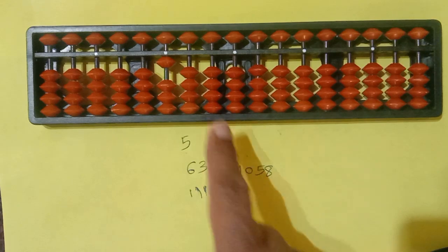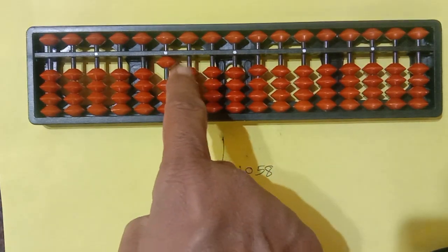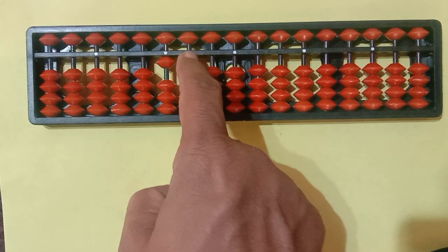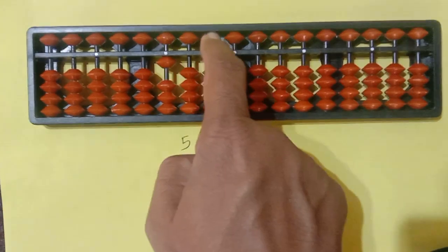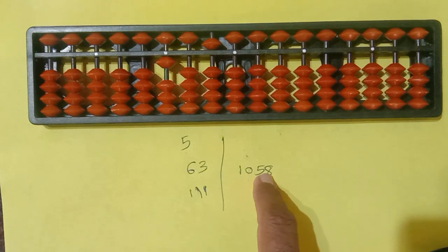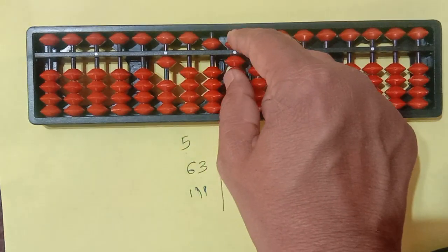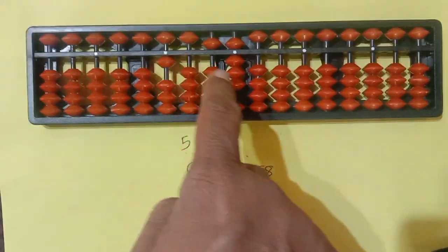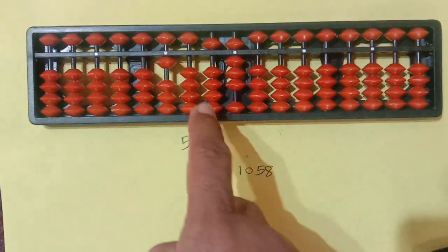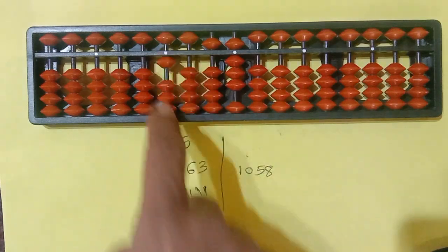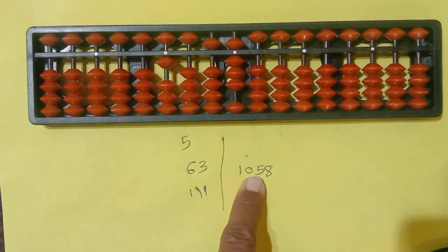In 100 place, nothing to write there. No bead should touch this one. In 10th place, it is 50. And in unit place, it is 8. So it is 1058. In 100 place, there is no, means it is 0.